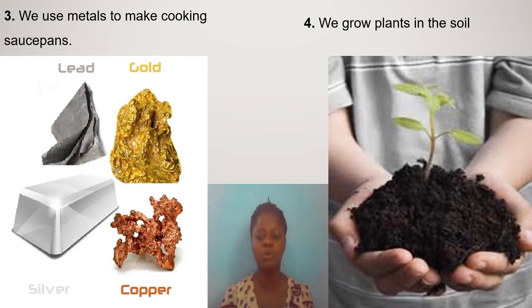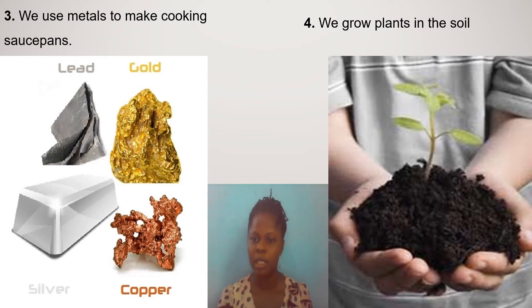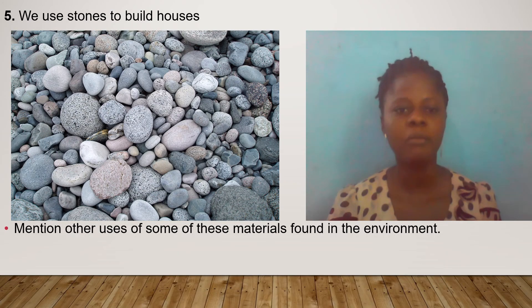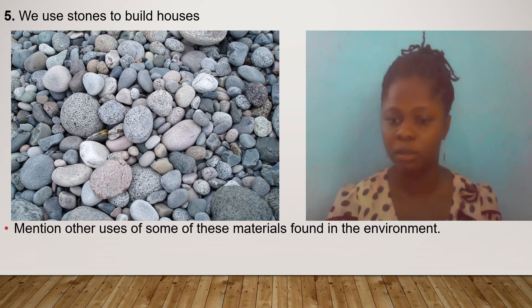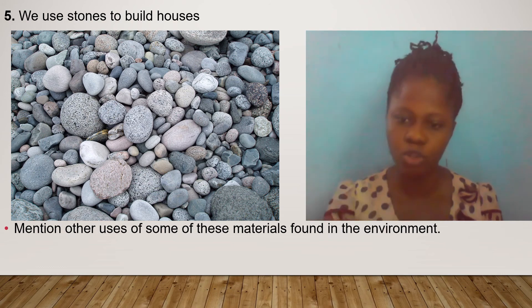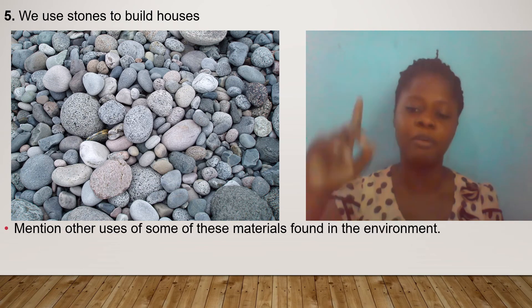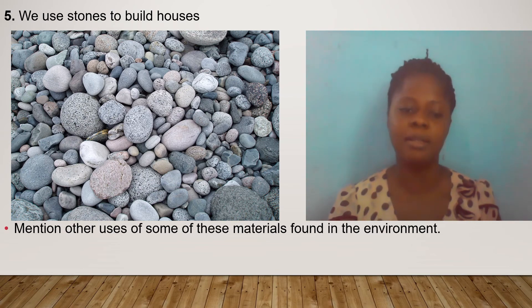Our fourth material is soil. We all know that it is soil that helps our plants to grow. Our fifth material is stone. Stones are used in building houses and in the construction of roads. I have given you five materials, and from our first page you could see there were others — can you mention some of the other materials you saw?